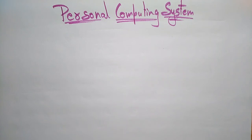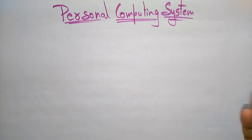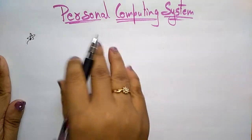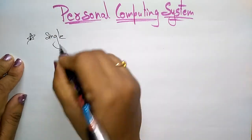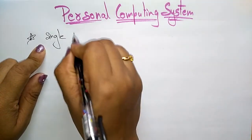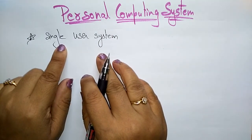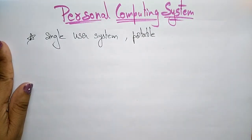Coming to the next type of operating system, that is a personal computing system. A personal computing system is nothing but your personal laptop. In a personal computing system, you call it a single user system because you are the only one using the system. Your personal laptops are single user systems and they are always portable.